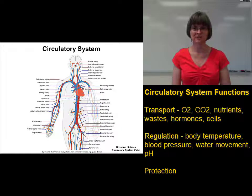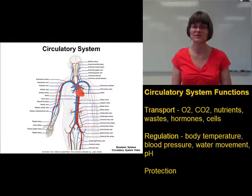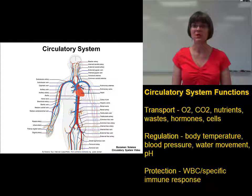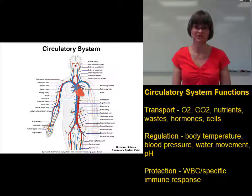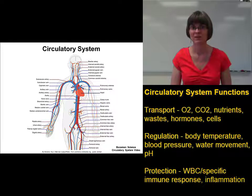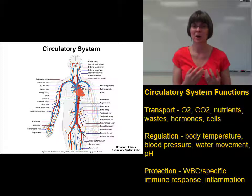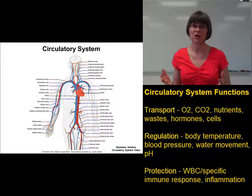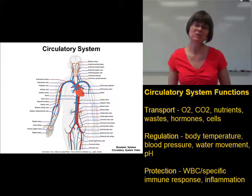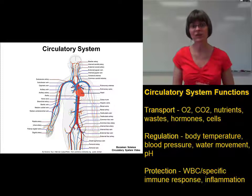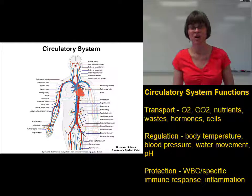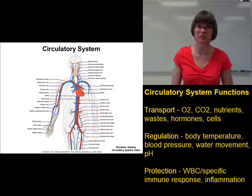The third category of circulatory system functions is protection. One of the main ways the circulatory system protects us is through white blood cells, which are an important part of the immune system that helps protect the body against diseases, toxins, and other dangerous substances. Related to that is inflammation — a local tissue response to damage of any kind, whether from infection by bacteria or from a scrape or bump. The function of inflammation is to prevent further damage and heal whatever damage was caused.